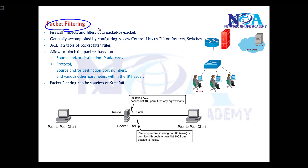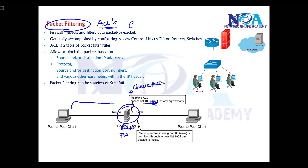Packet filtering is essentially ACLs — if you remember from basic CCNA routing and switching. It is a method where traffic moves through a device, which can be a router or a firewall, and the device filters the packets by checking the source, destination, protocol (TCP or UDP), and source or destination port numbers such as port 80, port 23, or port 21, along with various other parameters as it moves through that networking device.